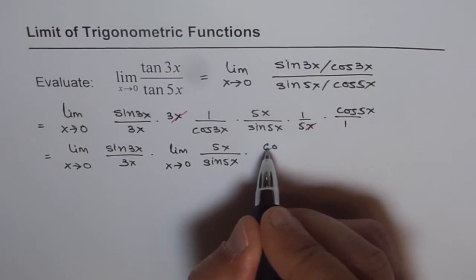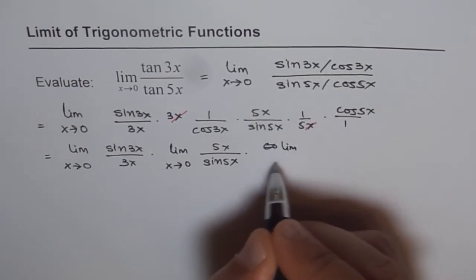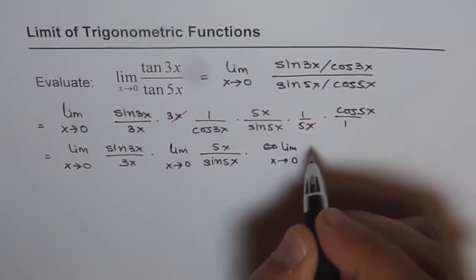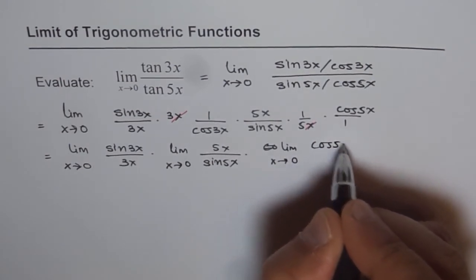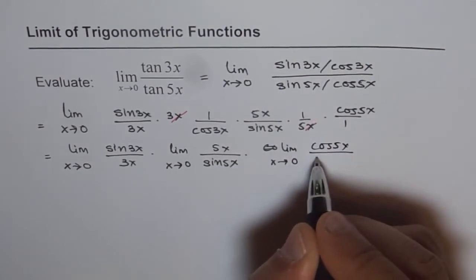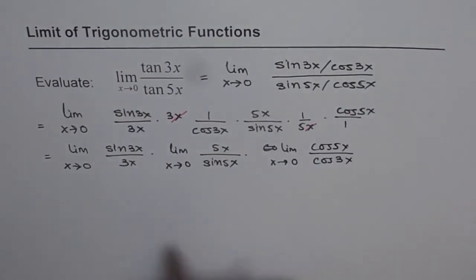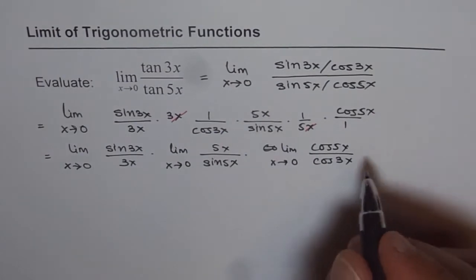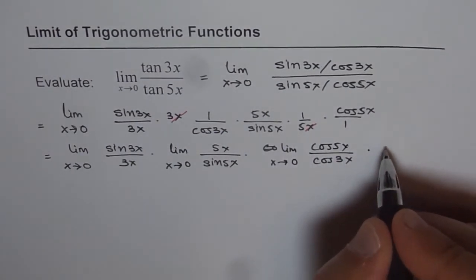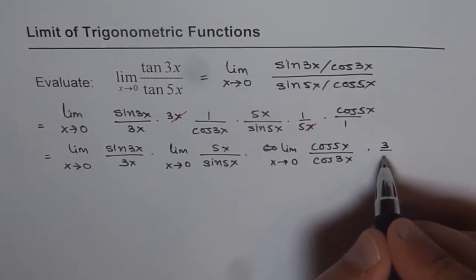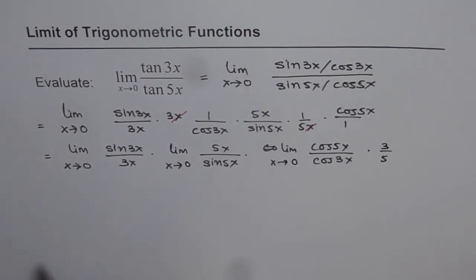So we can say limit x approaching 0 of cos 5x over cos 3x. And then the numbers 3 over 5, which are constants. So I will just write them at the end now and later we can bring them together.